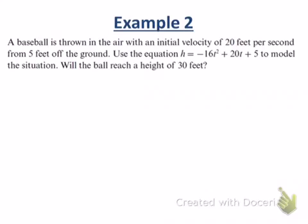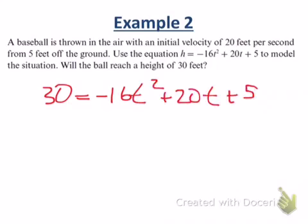A baseball is thrown in the air with an initial velocity of 20 feet per second from 5 feet off the ground. Use the equation h = -16t² + 20t + 5 to model the situation. Will the ball reach a height of 30 feet? So what we're really asking here, guys, is, y'all listen, will the ball reach a height of 30 feet? So does this have a solution?